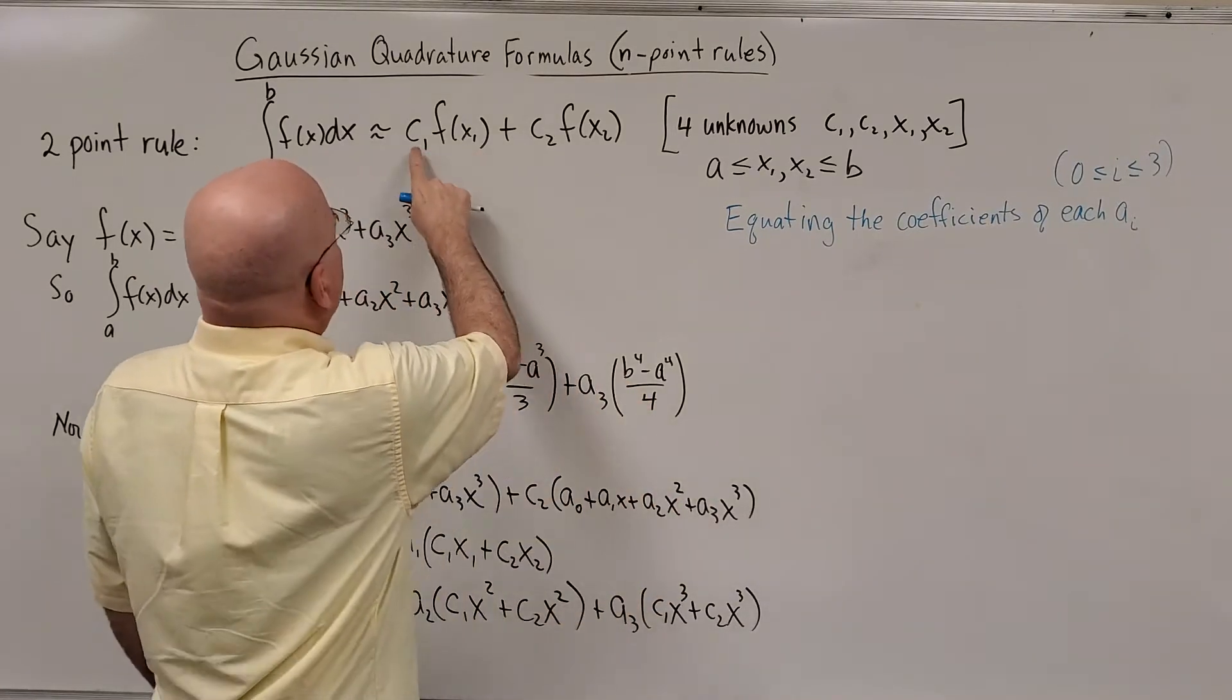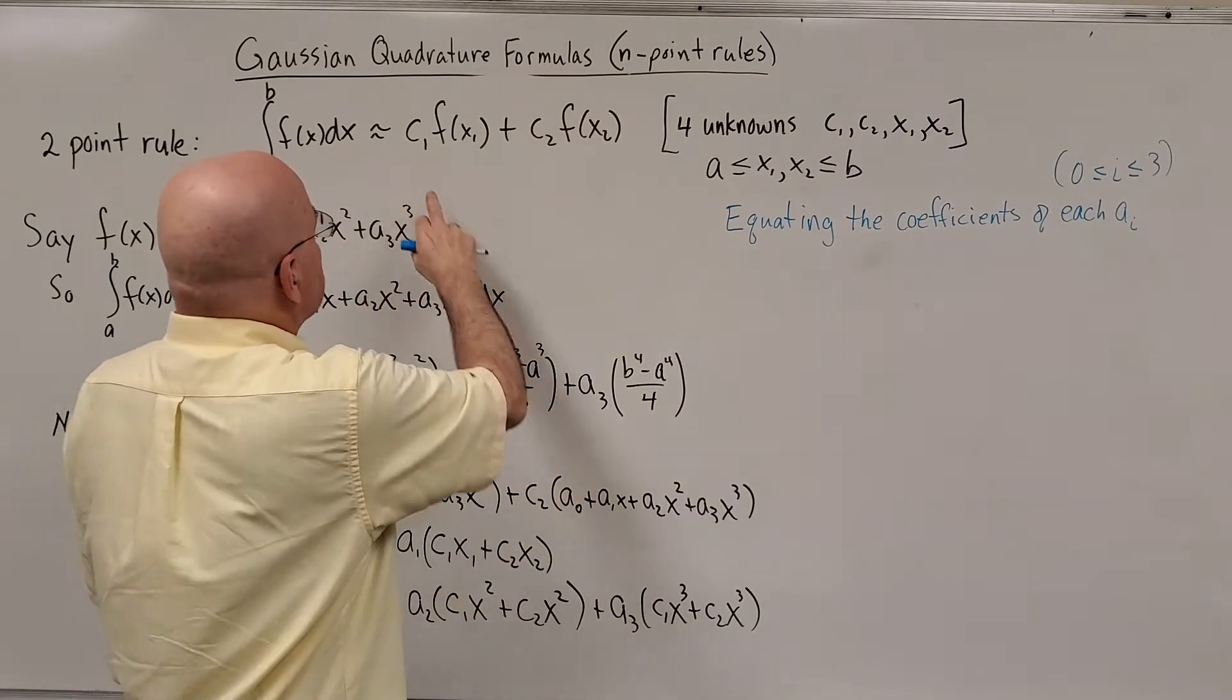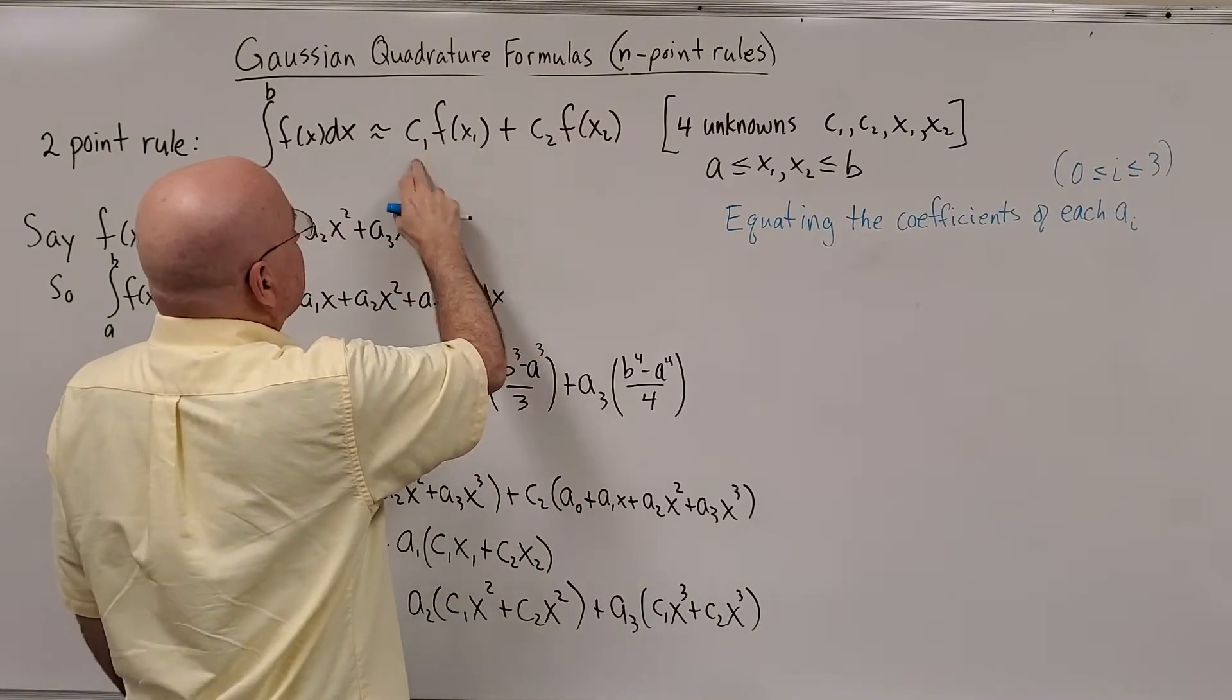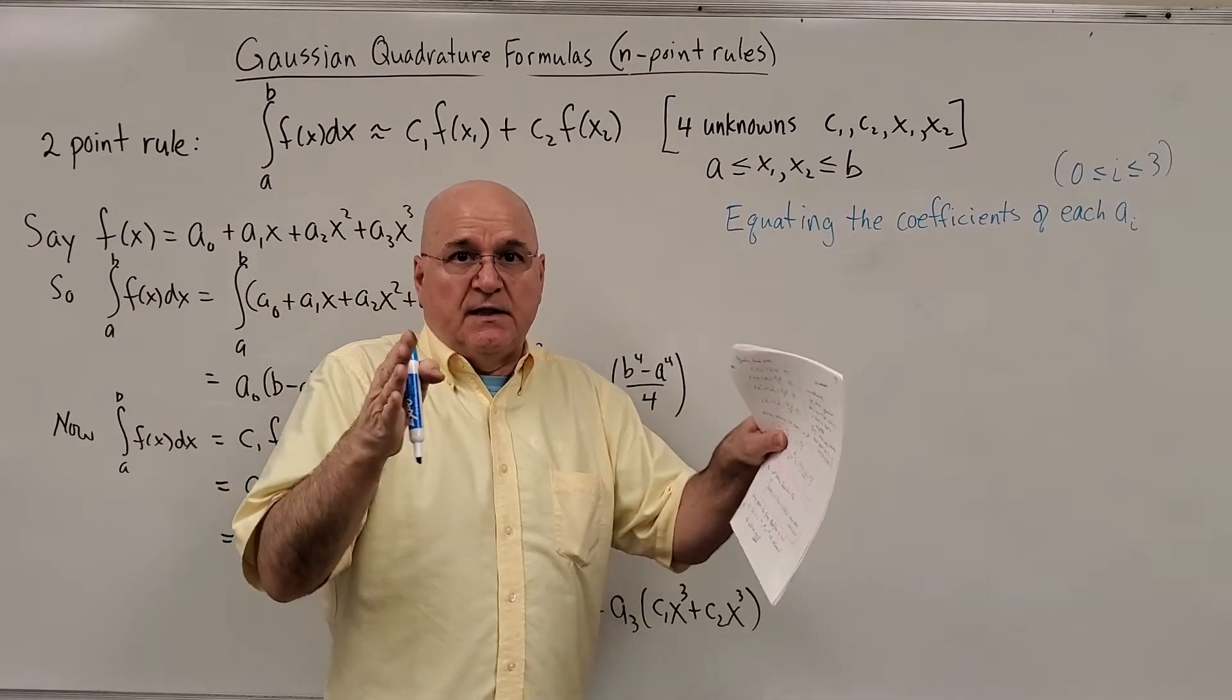That means we have one, two, three, four unknowns. The two coefficients are the two weighting factors and X1 and X2. Do we take the end points? Do we take ones in the middle somewhere?